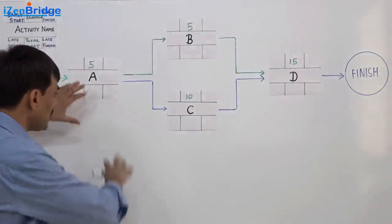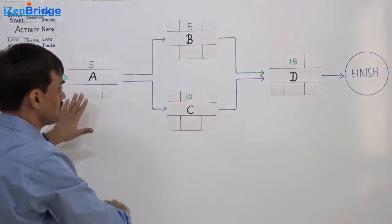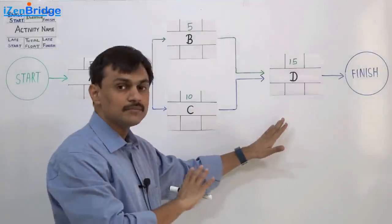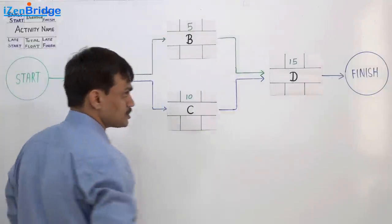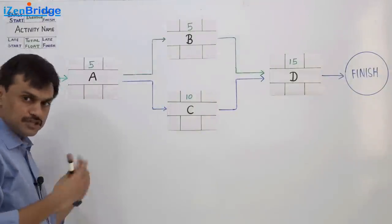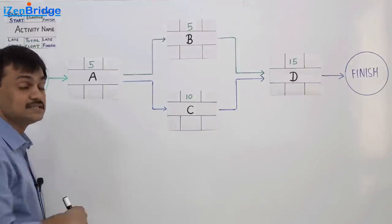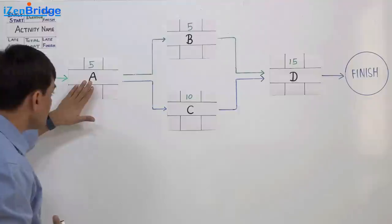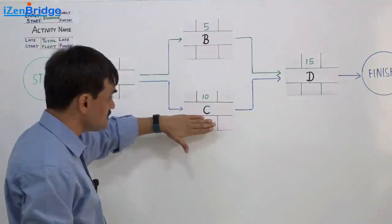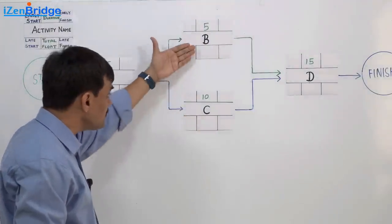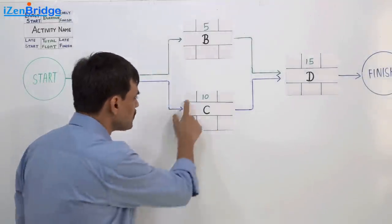The critical path method arranges activities as per their relationship. In this example we have four activities — A, B, C, and D — taken from the PMBOK Guide 6th edition. The arrows show their relationships, all of which are finish-to-start. Activity A is 5 days, activity B is 5 days, activity C is 10 days, and activity D is 15 days. Activities B and C can happen in parallel.